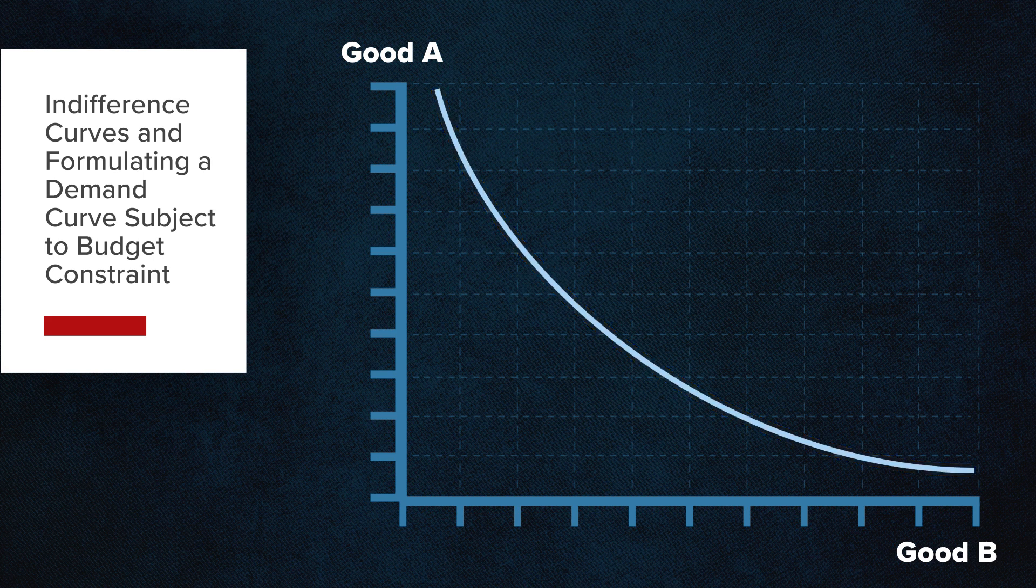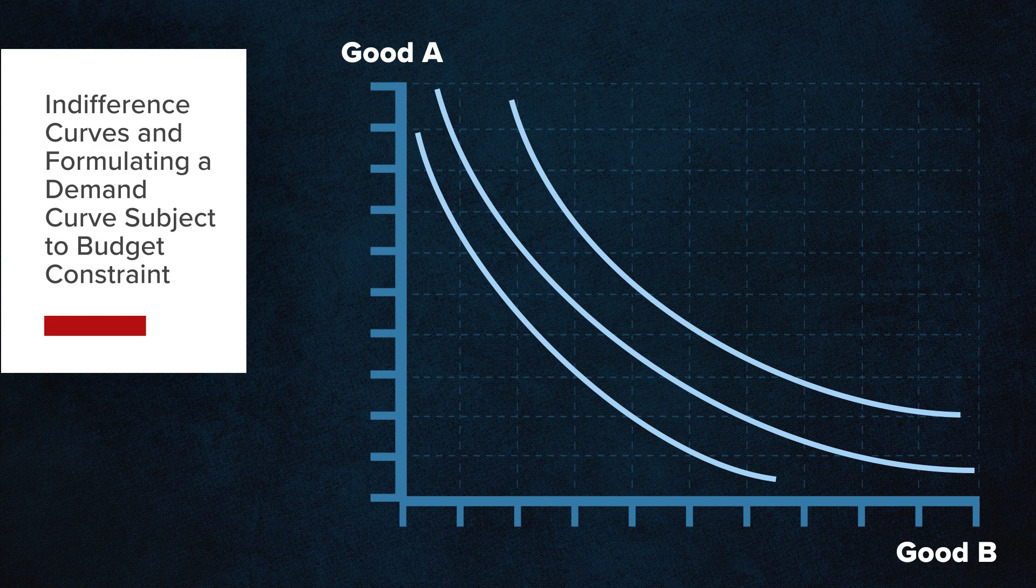We can display additional indifference curves to the plot, which simply show greater levels of utility between two goods. Curves further to the right imply more satisfaction than any curve to its left.